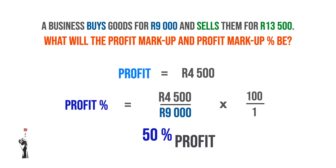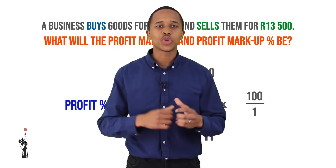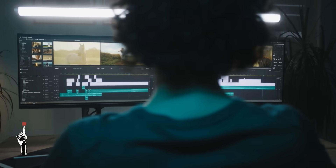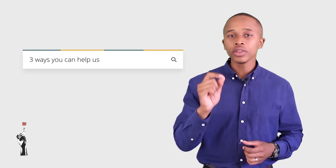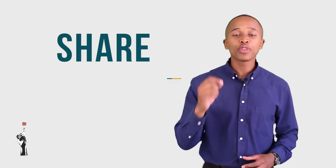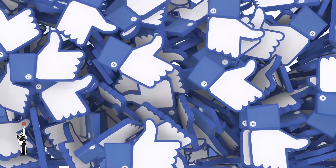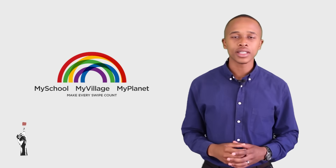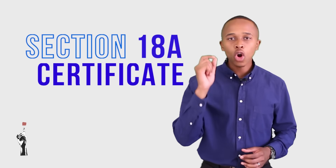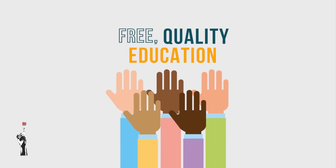That's all for today, Grade 9s. In the next lesson, we'll be looking at cash transactions for a trading business. I hope you enjoyed this lesson. These lessons are very costly for us to produce, but we are determined to keep them free for everyone. We produce these lessons at the rate at which they get funded. Here are three ways to join hands with us: first, share our resources so more people can benefit; second, add us on My School as a beneficiary; third, we issue Section 18A certificates so your contribution will have a tax benefit. Let's collaborate for free, quality education for all South Africans.